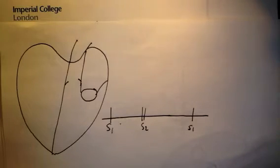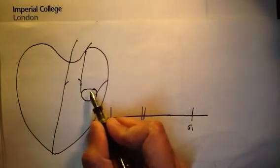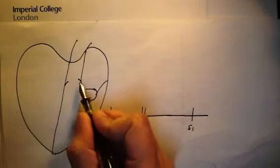Now what about a third and a fourth heart sound? Here is the cardiac cycle again, the first heart sound being the mitral valve closing, the second heart sound being the aortic valve closing.